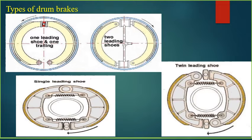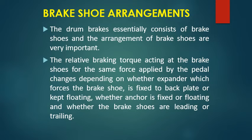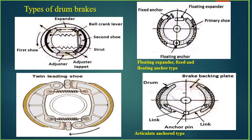Drum brakes can be further classified based on shoe arrangement: one leading shoe and one trailing shoe, or two leading shoes. In one leading and one trailing shoe arrangement, one part of the shoe is the first element that expands during brake application. In the two leading shoe arrangement, both shoes are activated and push outward radially. The relative torque activity on the brake shoes for the same force applied by the pedal changes depending on whether the expander which forces the brake shoe is fixed to the back plate or kept floating.